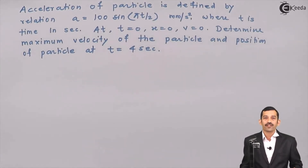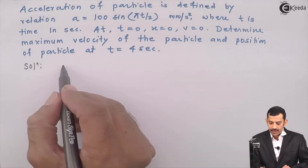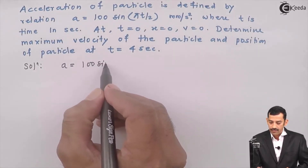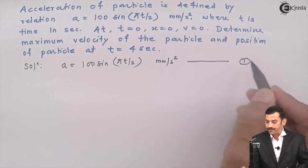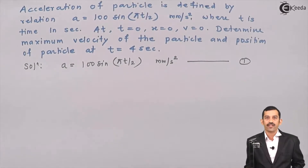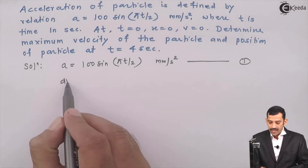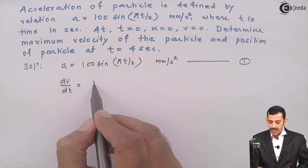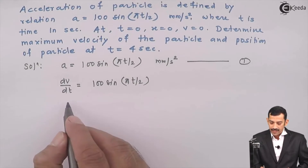For maximum velocity, the condition is that dv/dt = 0. The given equation of acceleration is equation number 1: a = 100 sin(πt/2). Since acceleration is a function of time t, to find velocity we substitute a as dv/dt, giving dv/dt = 100 sin(πt/2). Taking dt to the right side, we get dv = 100 sin(πt/2) dt.